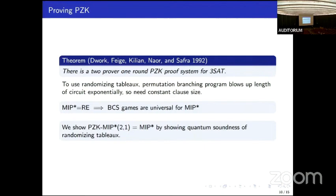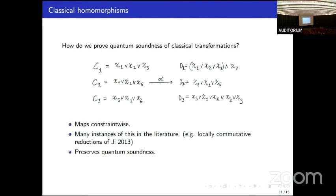Dwork, Feige, Killian, Noor, and Safra used this technique to prove that there are two prover one round perfect zero knowledge proof systems for 3SAT. The reason why they use 3SAT is that to use these randomizing tableau, the permutation branching program that's the first row of the tableau blows up the length of the circuit exponentially. So you need constant clause size as input to get constant clause size as output. Fortunately for us, by oracularizing the MIP star equals RE game, we can see that Boolean constraint system games are universal for MIP star. We show our main result by demonstrating quantum soundness of the randomizing tableau reduction and the reduction of a general BCS game to 3SAT.